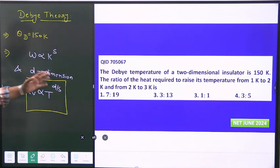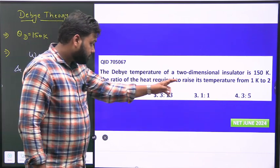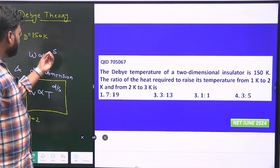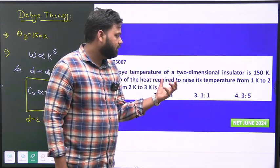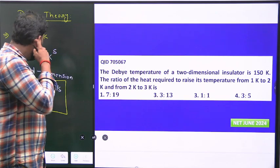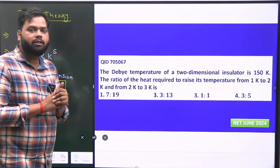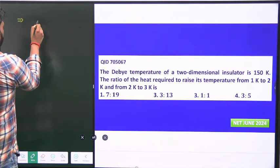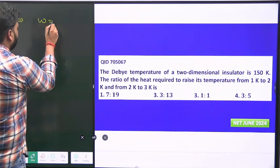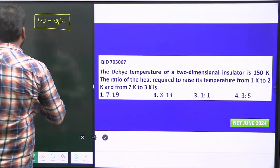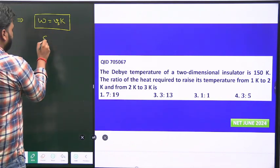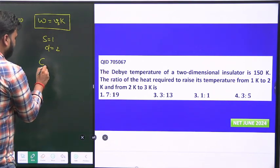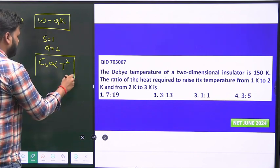In the question, the insulator is two-dimensional, so D equals 2. What about s? Since we're discussing the Debye temperature, the Debye theory talks about the acoustic branch—about phonons. The dispersion relation for phonons is omega equals v_s times K, where v_s is the velocity of sound. Comparing, we get s equals 1 and D equals 2. Therefore, C_v is proportional to T squared.